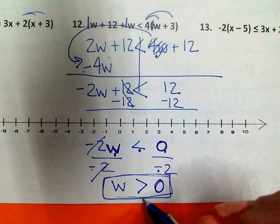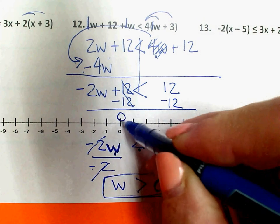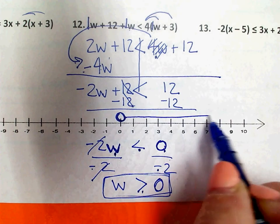When I graph this, since it doesn't have the straight line under it, I'm going to use an open circle above the 0. And greater than means it's everything to the right.